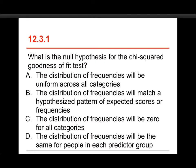The first question in this quiz is, what is the null hypothesis for the chi-squared goodness-of-fit test? The choices are A, the distribution of frequencies will be uniform across all categories, B, the distribution of frequencies will match a hypothesized pattern of expected scores or frequencies,